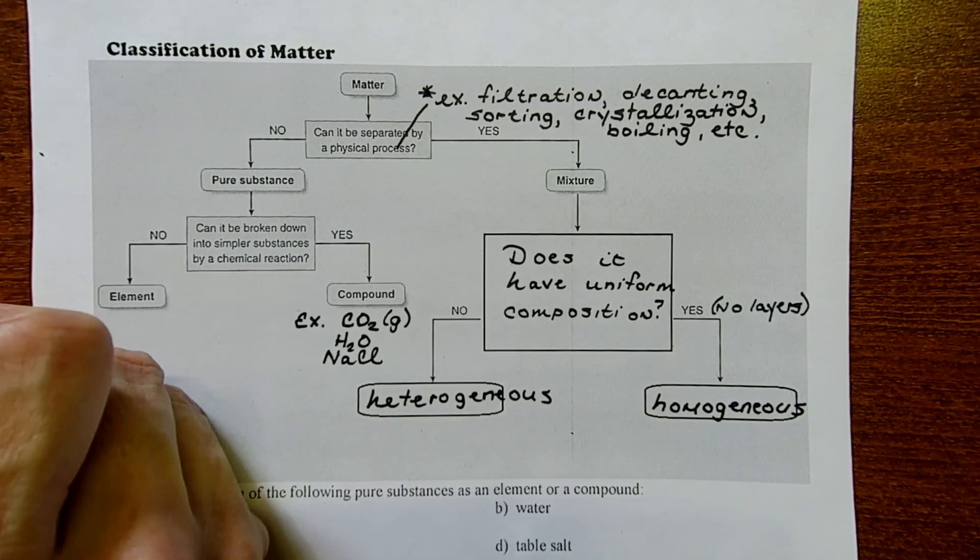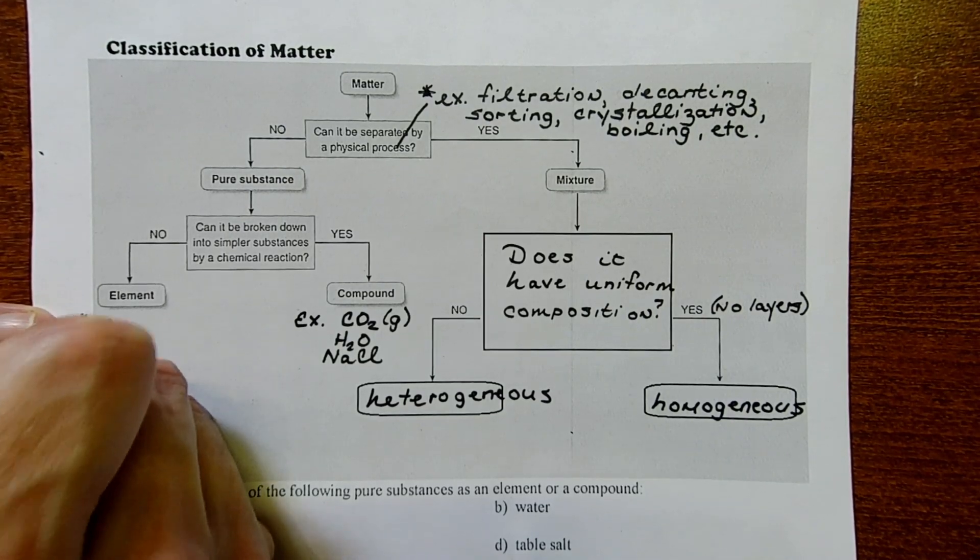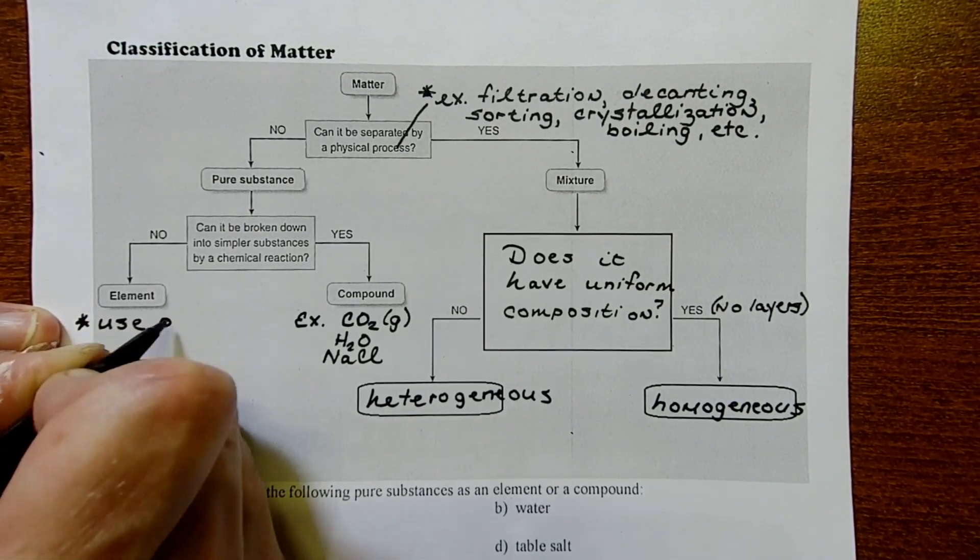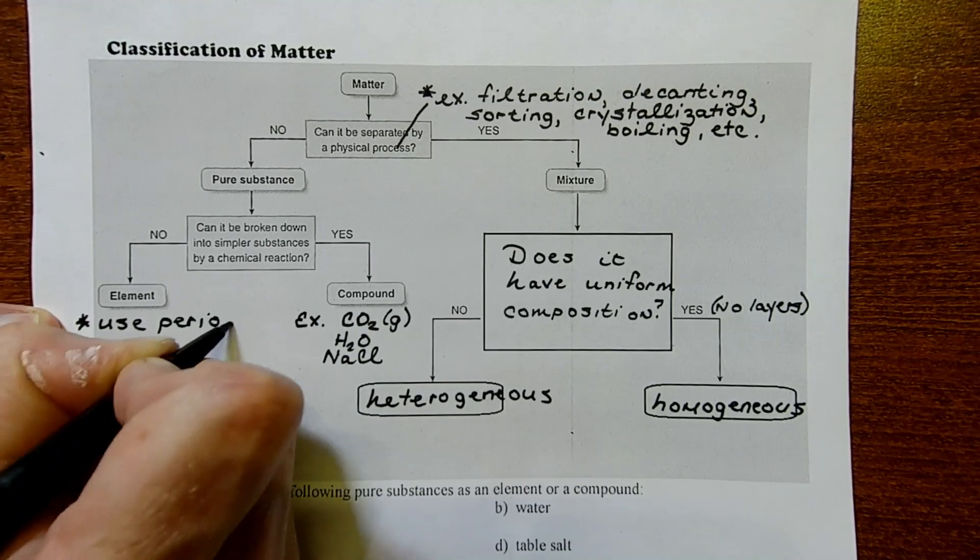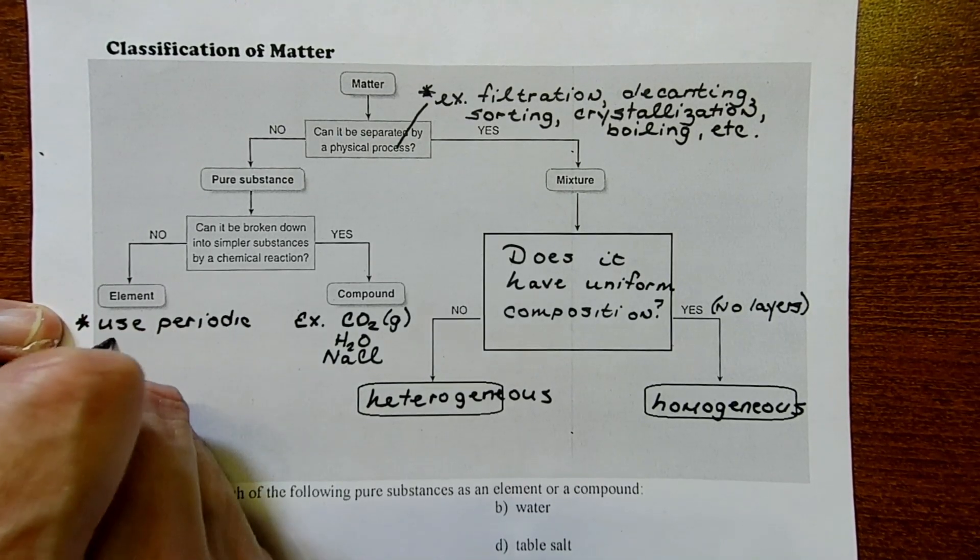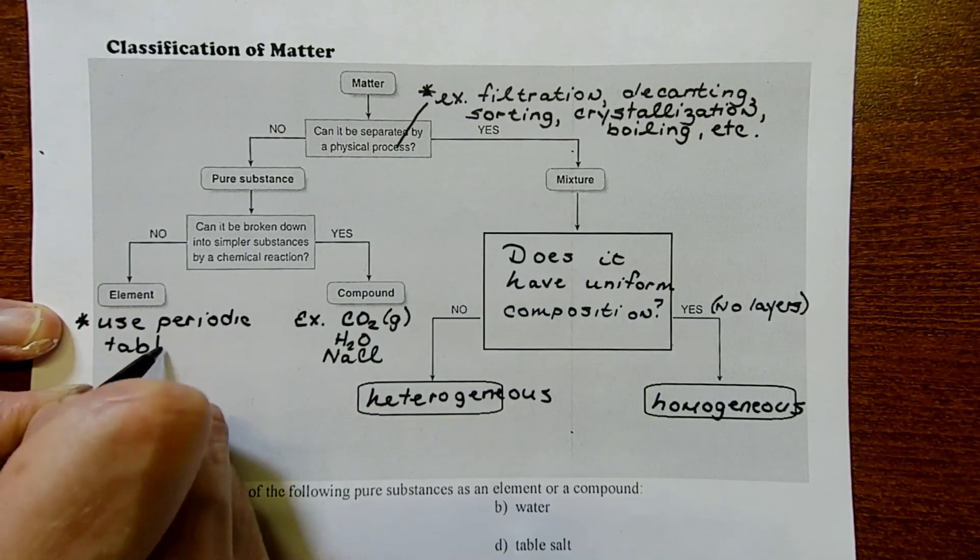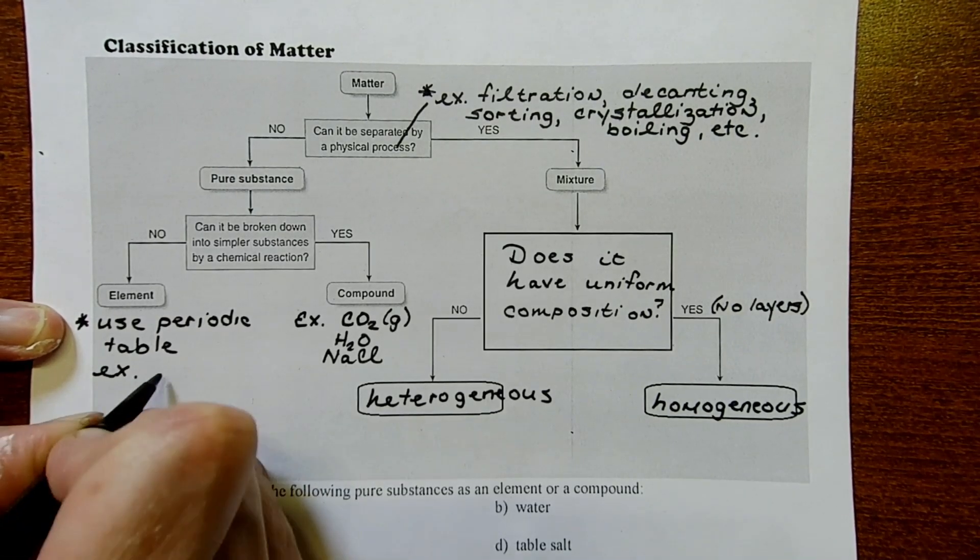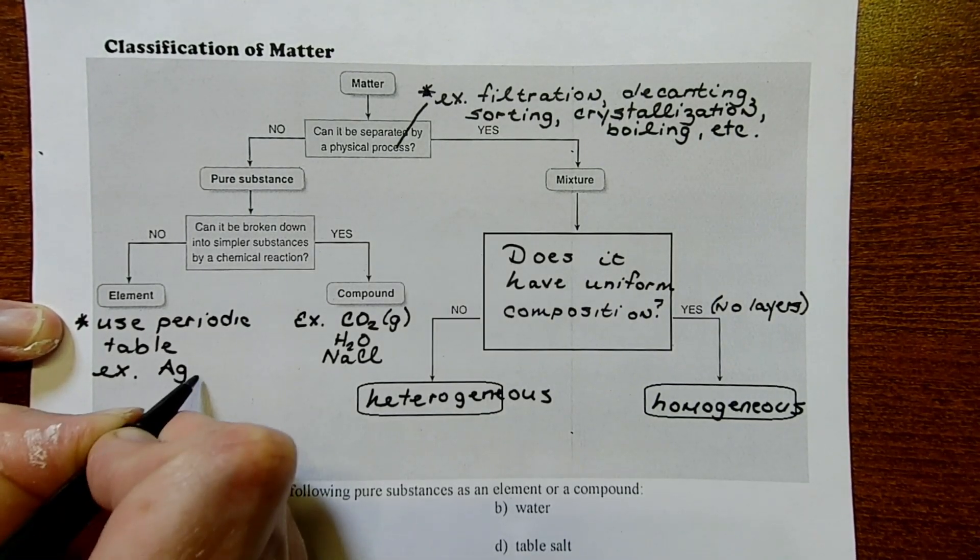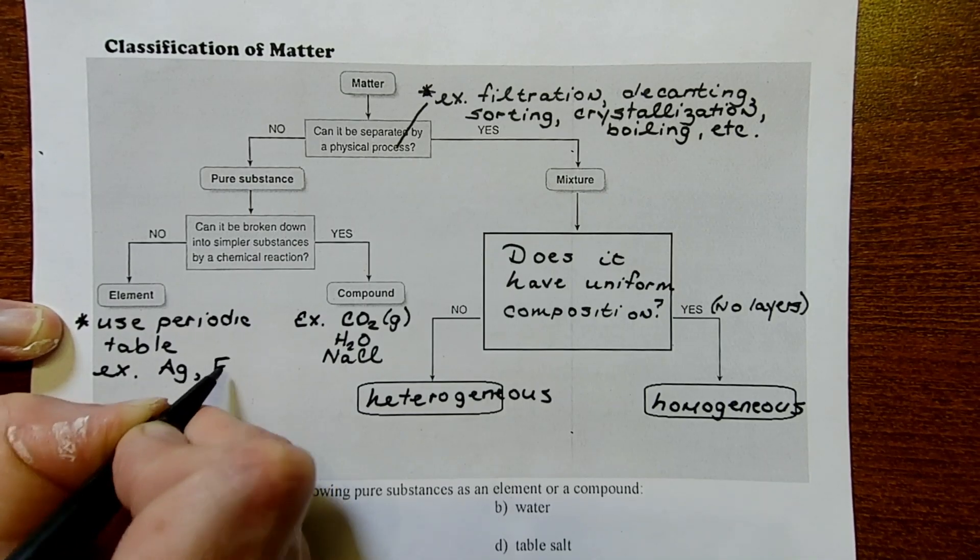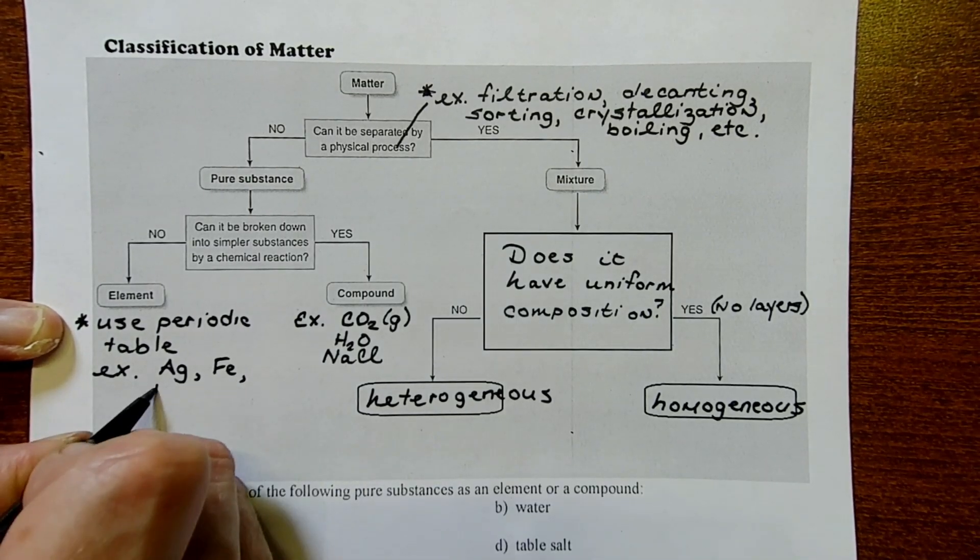I always recommend that students use their periodic tables. If you see it on the periodic table, then it's an element. Some examples would be silver or iron, just writing the symbols here, carbon.